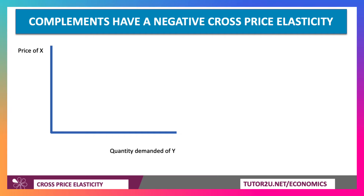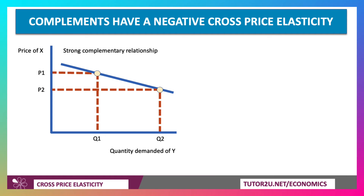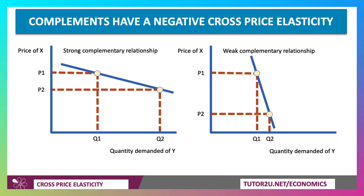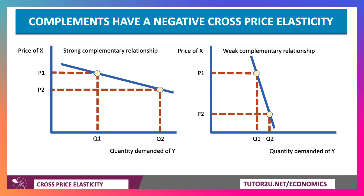Here's the diagram for complements: price of X on the y-axis, demand for Y on the x-axis. In the first diagram, there's a strong complementary relationship — the price of X goes down and there's a big increase in demand for Y. In the second, it's a weaker relationship — a big fall in the price of X leads to only a relatively small increase in the demand for Y. Both have a negative cross-price elasticity, but the left-hand diagram shows a strong complement relationship and the right-hand side shows a weaker one.